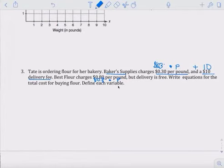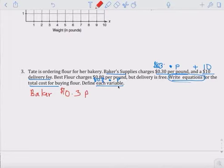They assume you know it's plus zero. Write an equation for the total cost for buying flour. Define each variable. Okay, so the first equation is for Baker's, and that we got 30 cents per pound, plus a $10 delivery fee, equals to total cost.